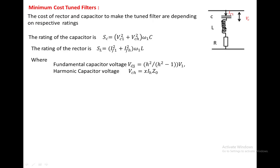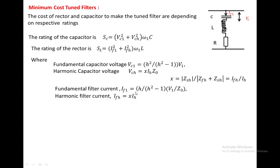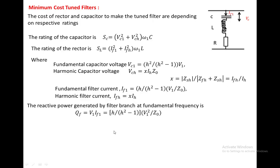The fundamental capacitor voltage VC1 equals H²/(H²−1) · V1, where H is the harmonic order. The harmonic capacitor voltage VCH equals X·IH·Z0, where IH is the harmonic current and X equals ZSH/(ZFH + ZSH), which also equals IFH/IH. The fundamental filter current IF1 equals H/(H²−1) · V/Z0, and the harmonic filter current IFH equals X·IH. The reactive power generated by the filter branch at fundamental frequency is QF = V1·IF1 = H/(H²−1) · V²/Z0.